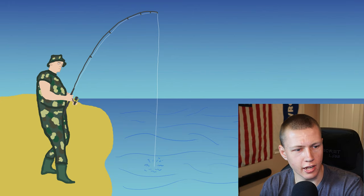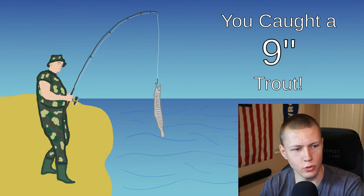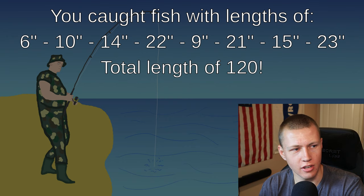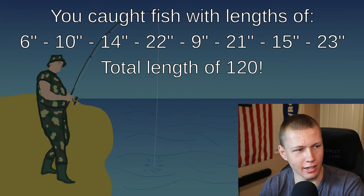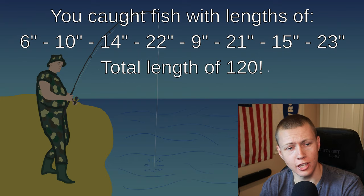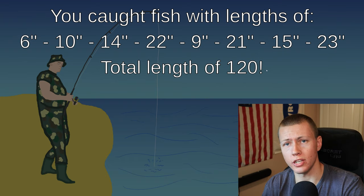Coming back to Unity, catching a couple of fish — once we catch up to eight fish, it gives us a final end screen that says 'you caught fish with lengths of 6, 10, 14, 22, 9, 21, 15, and 23 for a total length of 120.'